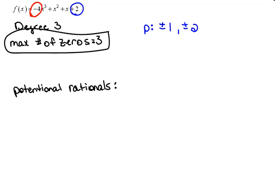Q is the leading coefficient's factors. So for Q, I would have to list out, because 4 has several, doesn't it? We could multiply 1 times 4 or 2 times 2. So our factors would be plus or minus 1, plus or minus 2, and plus or minus 4.